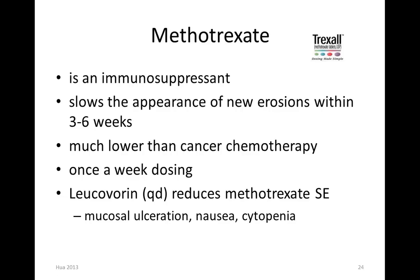Methotrexate is an immunosuppressant that can slow the appearance of new erosion, but it has a slow onset of action — it takes three to six weeks. Methotrexate (Trexall) was the drug first discovered to treat cancer, so it's primarily a cancer therapy, but at a much higher dose. For rheumatoid arthritis it's a much lower dose with once-a-week dosing. Patients on long-term methotrexate may have risk of mucosal ulceration, nausea, and decreased blood cell count. Leucovorin once daily can reduce methotrexate side effects.